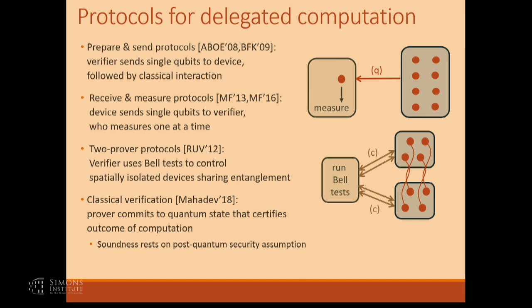An advantage of that protocol, relevant when we start talking about zero-knowledge, is that it allows verification not only of efficient quantum circuits, but also problems in quantum NP — the class called QMA — where you're trying to verify the existence of a certain quantum state. As long as the prover has sufficiently many copies of that quantum witness, it can demonstrate that. Some of these protocols have the blindness property, but none of them has a zero-knowledge property. So that's what I want to talk about for the second part.